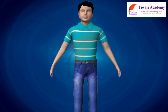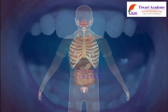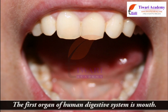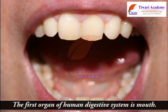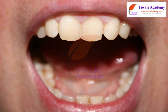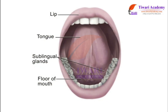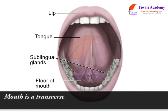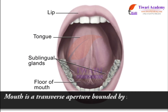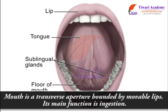In human beings, nutrition takes place through the human digestive system. The first organ of the human digestive system is the mouth. Let us learn more about the Buccal Cavity. Mouth is a transverse aperture bounded by movable lips. Its main function is ingestion.